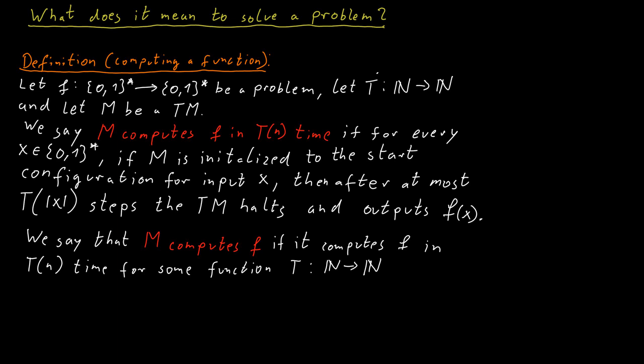What this simply means is that the Turing machine computes this function f if for every input it produces the correct output and does so within a limited number of computational steps.